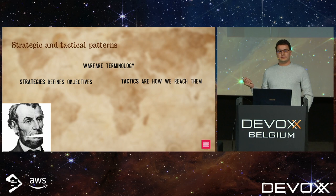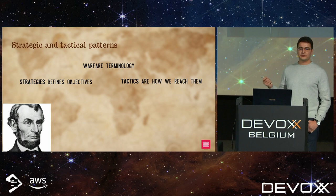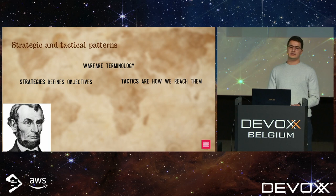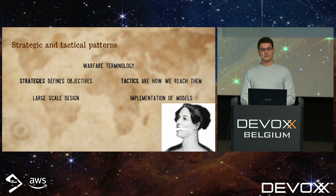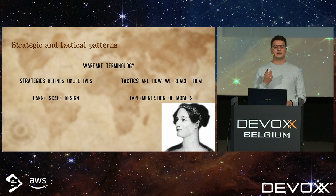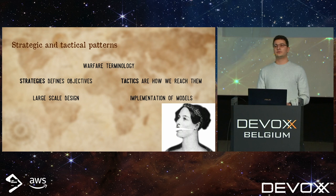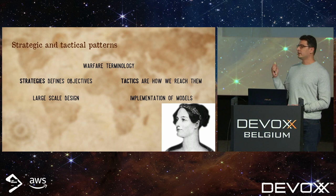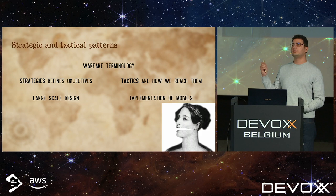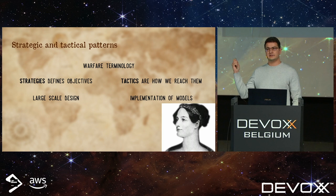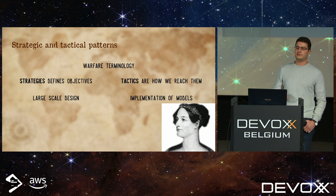DDD is composed of strategic and tactical patterns — terminology borrowed from warfare. Strategy defines the objectives; tactics is how we reach those objectives. In domain driven design, strategy is large-scale design — it helps us decide where to spend resources and which problems to solve. Tactics are the tools used to implement strategic decisions. Tactical patterns are much closer to the code: aggregates, value objects, entities, domain events, hexagonal architecture — all tactical.